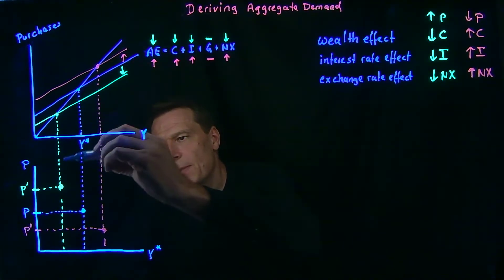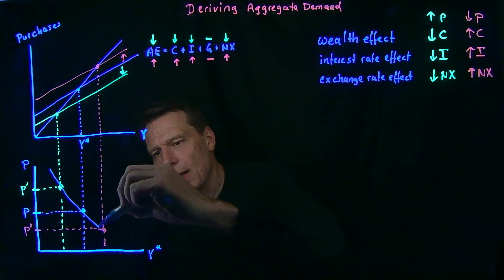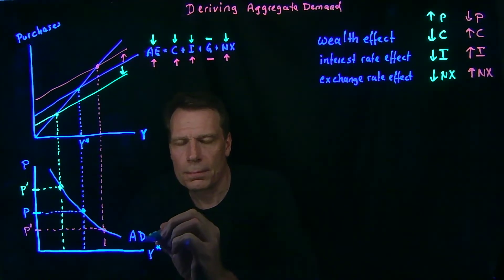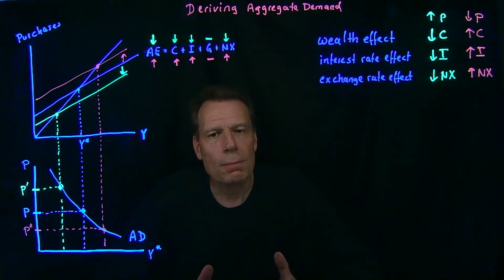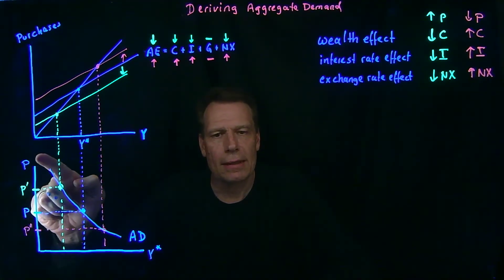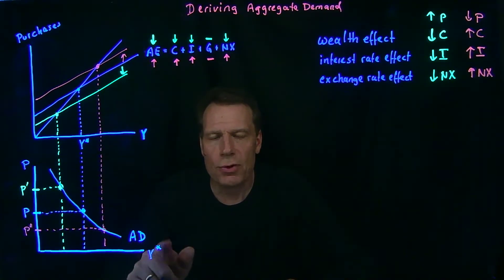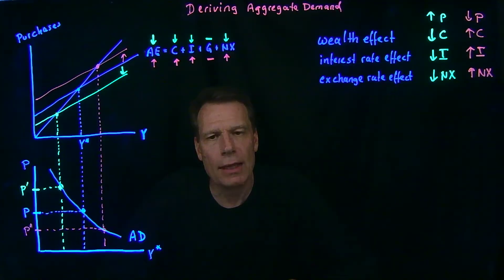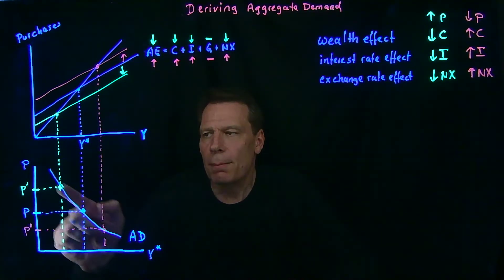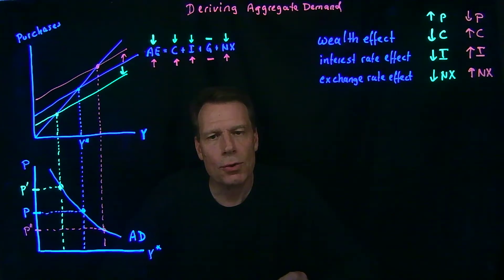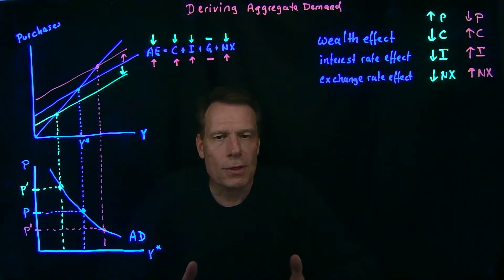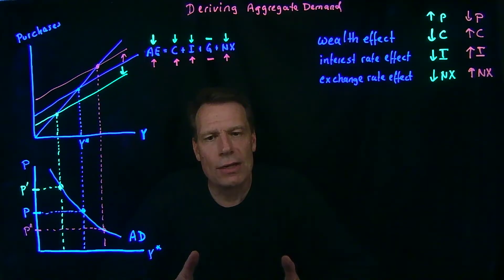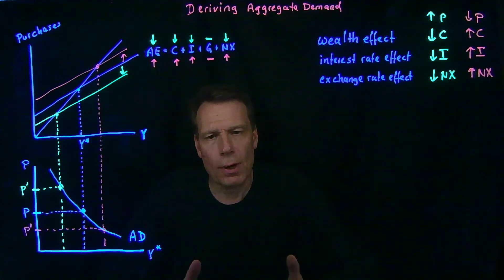We can connect these points and we get a downward-sloping aggregate demand curve. Now that sure looks a lot like the demand curves we drew in microeconomics — we have P indicating prices on the vertical axis and we're measuring some quantity of output on the horizontal axis. But in microeconomics, the price on the vertical axis was the price of a single good, and the quantity on the horizontal axis was the quantity of that good. The demand curves in micro showed how consumers change the quantity demanded as price changes — not what happens to equilibrium quantity.